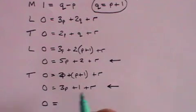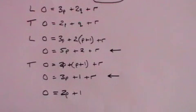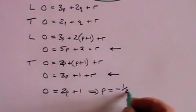And we get 0 equals 5P minus 3P is 2P, 2 minus 1 is 1, and R minus R is 0. And that gives us that P equals minus 1 half.